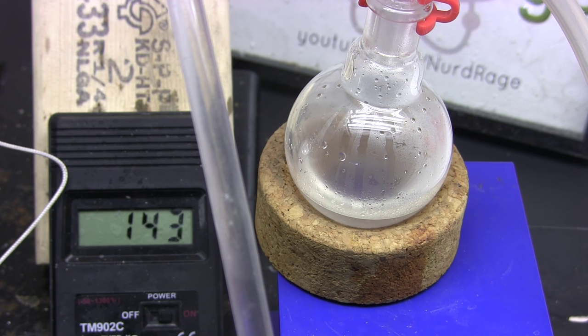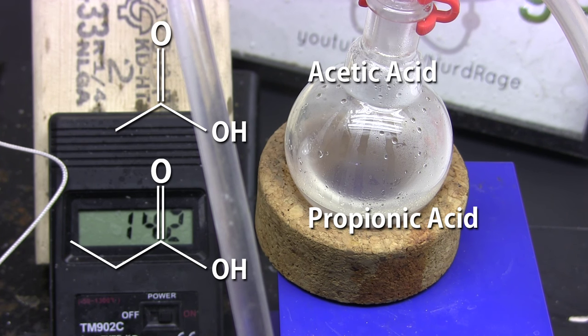Greetings fellow nerds. In this video we're going to make propionic acid. It's a carboxylic acid like the much more well-known acetic acid but has one additional carbon in its backbone. It's used to make solvents, fragrances, plastics, herbicides and other chemicals.